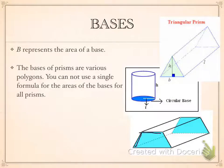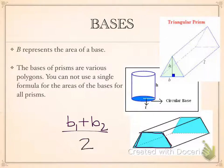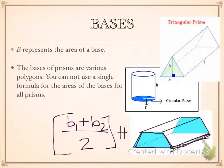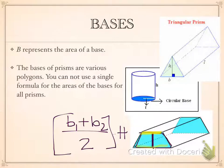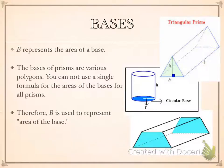You might also have a trapezoid base. If you have a trapezoid, your base is this trapezoid, and instead of using the other formulas, you would use the trapezoid formula: base 1 plus base 2, all divided by 2, and then multiply that answer by the height of the trapezoid. So for the trapezoid, you do base 1 plus base 2, divide by 2, then multiply by the height of the trapezoid.